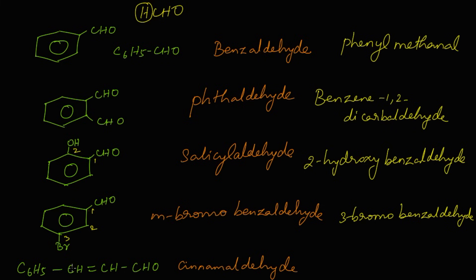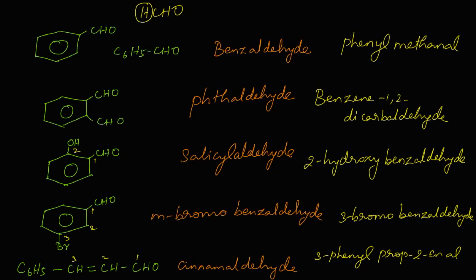For the final structure — cinnamaldehyde — numbering gives three carbons with a phenyl group at the third carbon: 3-phenyl. With three carbons (prop) and a double bond at the second carbon (two-en) and the aldehyde (AL), the IUPAC name of cinnamaldehyde is 3-phenylprop-2-enal.